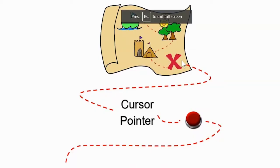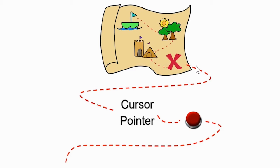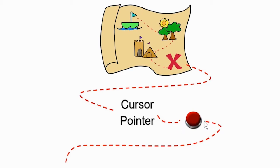First, let's go back to the point of the cursor marking 'you are here.' For that reason, a normal cursor takes the form of an arrow, which we call a pointer. The pointer also helps with precision when clicking.